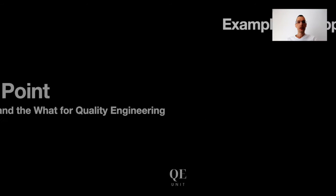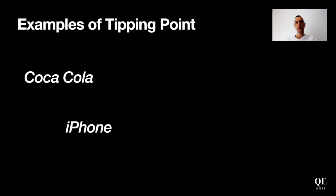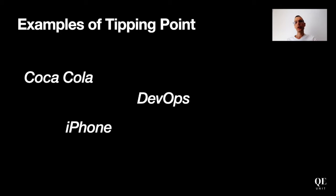Let's start with a concrete example of a tipping point we all know about. The most common ones from history are, for example, Coca-Cola, the iPhone — we all know about its large spread and one of the major sources of revenue for Apple. DevOps is also widely known in the IT ecosystem, and Windows we don't need to talk about either.